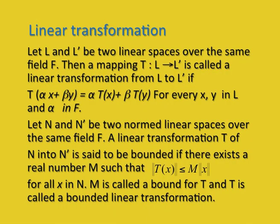Now we define mappings on linear spaces, known as linear transformations. If L and L' are any two linear spaces over the same field F, then a mapping T: L → L' is called a linear transformation if T(αx + βy) = αT(x) + βT(y) for every x, y in L and α in F. If N and N' are normed linear spaces, a linear transformation T: N → N' is said to be bounded if there exists a real number m such that ‖Tx‖ ≤ m‖x‖. Here m is called a bound for T, and T is called a bounded linear transformation.